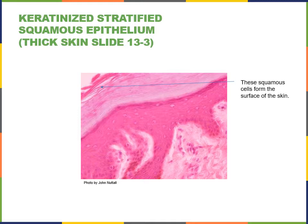Here we see an example of a stratified squamous epithelium — specifically, a keratinized stratified squamous epithelium found in the cutaneous membrane, the skin. This is the epidermis. The keratin forms numerous layers of dead cells at the apical surface, making this a distinctive epithelium. The function of the stratified squamous epithelium is to resist abrasion and protect underlying tissue.